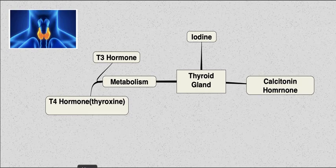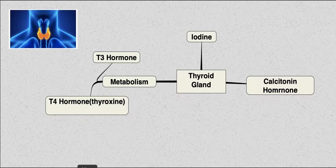Hello everyone and welcome back. Today we're going to be discussing the thyroid gland and the hormones related to that. As you can see by the picture in the upper left-hand corner, it's a picture of the thyroid gland. It's located in the lower neck, anterior to the trachea, and it consists of two lateral lobes.